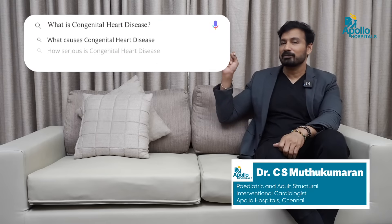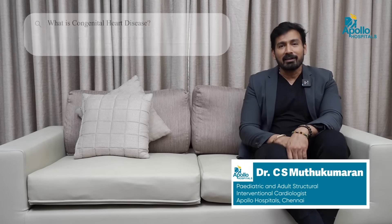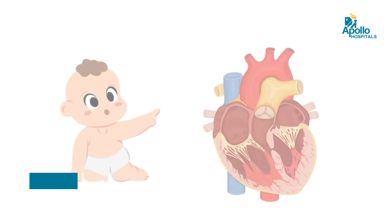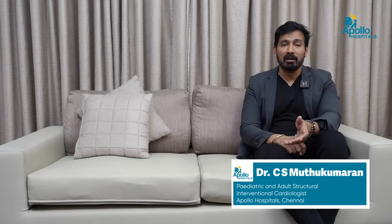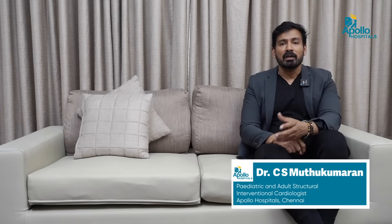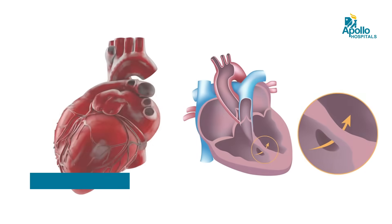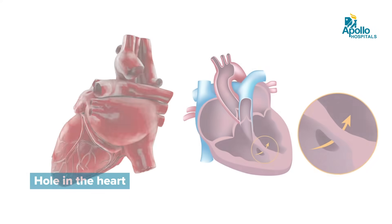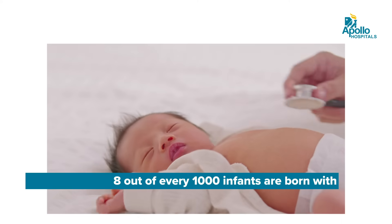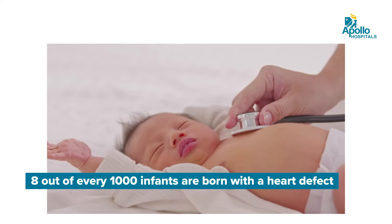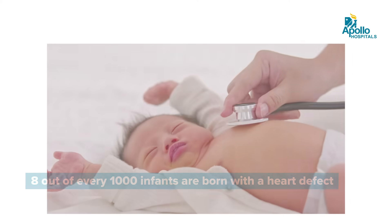What is congenital heart disease? Congenital heart disease is basically a defect in the heart that babies are born with. Like having a limb problem, you have a defect in the heart. Everybody is born normally with all chambers formed; when there is a hole or a valve absent by birth, it is called congenital heart disease. Out of 1000 live births, 8 children are born with a heart defect.